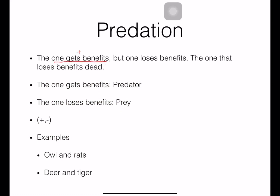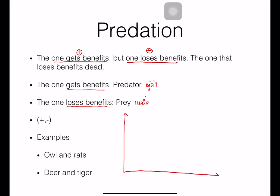In predation, one organism gets benefits — plus sign — and another one loses benefits — negative sign. The one that gets benefits we call the predator, and the one that loses benefits we call prey. The symbol is plus and minus.